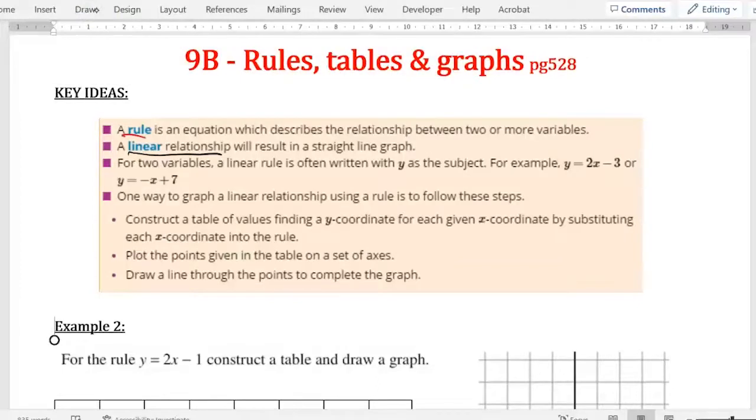A rule is an equation that describes the relationship between two or more variables. So you've got y on one side, x on the other side. How do they relate to each other? A linear relationship, linear line, will result in a straight line graph.